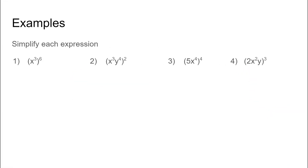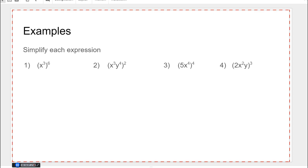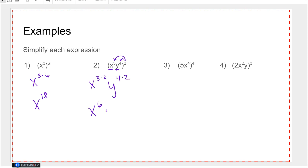Let's do a few more examples. X to the third to the sixth power: the base doesn't change but I multiply the exponents and I get x to the 18th. I've got two bases here, so I'm going to multiply exponent by exponent: x to the three times two, y to the four times two — so it's x to the sixth y to the eighth.